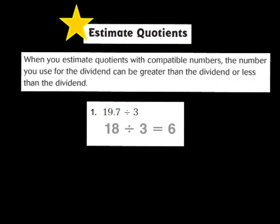I'm going to look at the two numbers given: 19 and 7 tenths being divided by 3. Keeping 3 as my divisor, I'll list multiples of 3: 3, 6, 9, 12, 15, 18, and 21. Now, 19 and 7 tenths falls right in between 18 and 21. I'm going to choose 18 because it is a little closer to 19 and 7 tenths than 21.